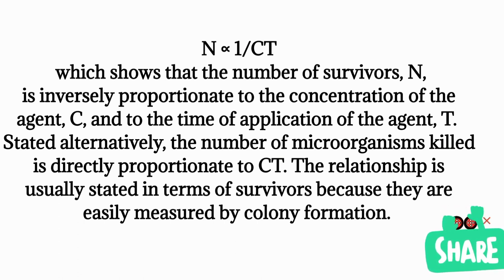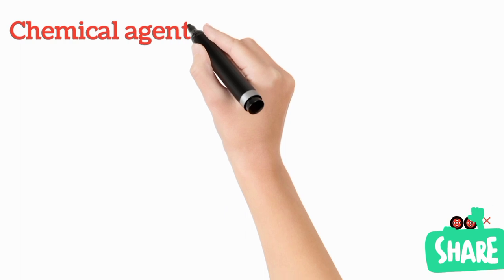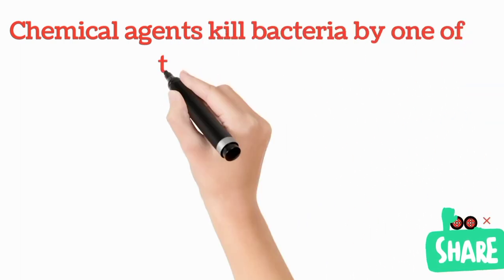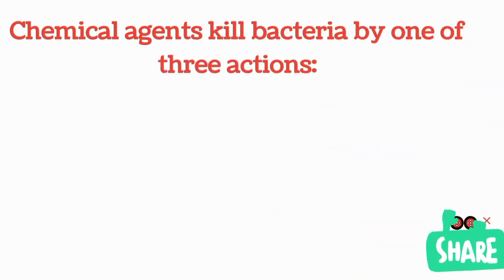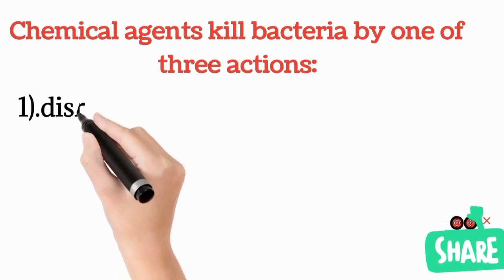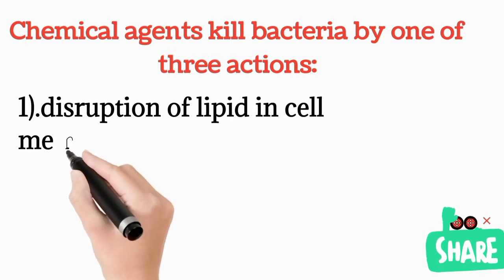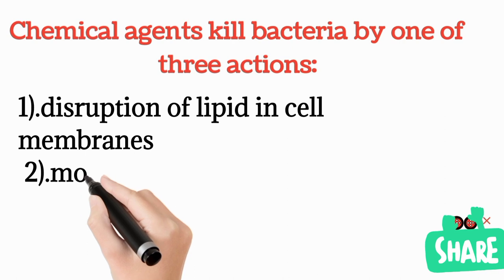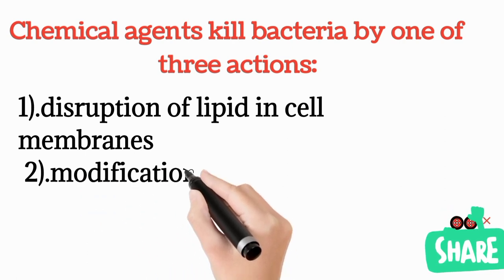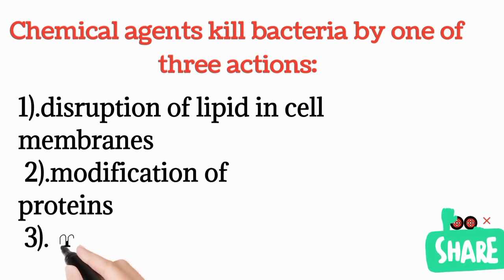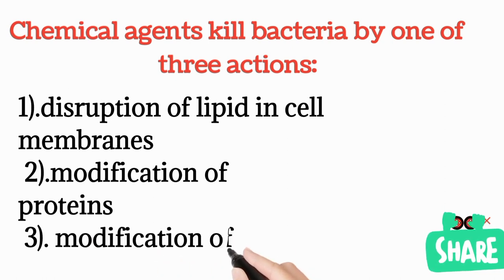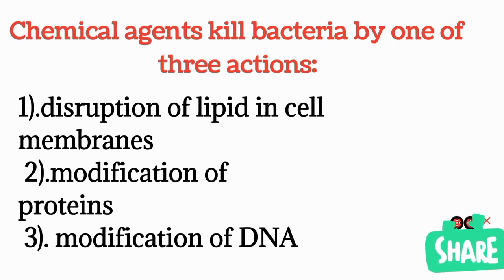Chemical agents kill bacteria by one of three mechanisms: disruption of lipids in the cell membrane, modification of proteins, or modification of DNA. These three mechanisms are how chemical agents destroy microorganisms.